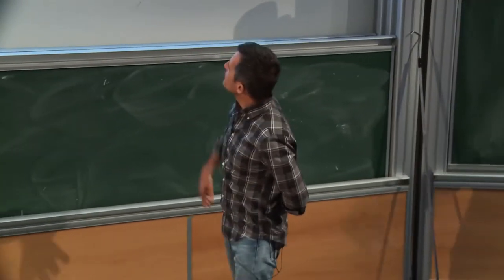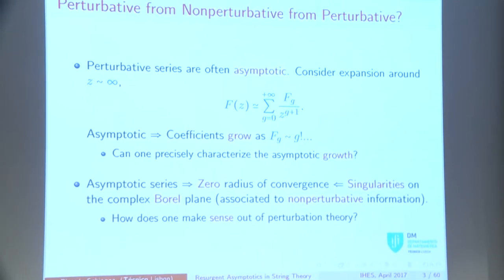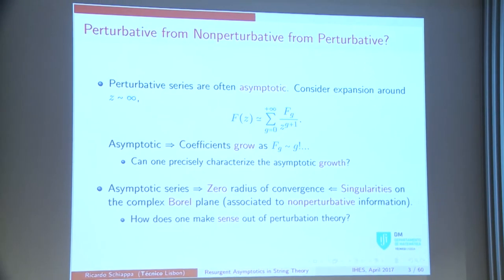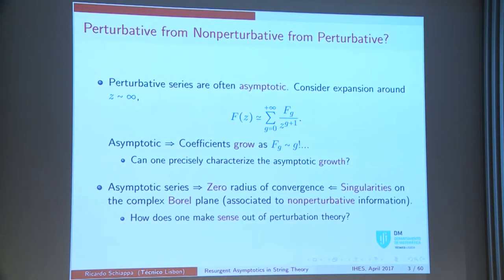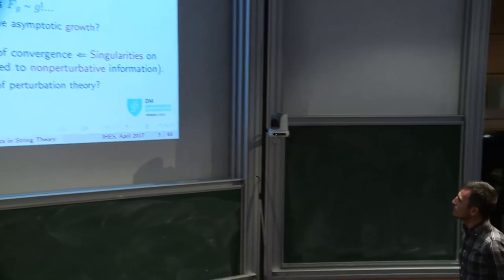This is work that's been going on for a long time with a lot of people. As Marcus was telling us this morning, perturbative series are often asymptotic. If we want to compute some quantity F in examples associated to energies in quantum mechanics or solutions of ordinary differential equations, we can try perturbative expansions around Z equals infinity. One question we'd like to answer is: we know that asymptoticness means these coefficients at leading order grow factorially fast. Can we precisely characterize the asymptotic growth, meaning can we say anything about the subleading contributions — the ones that are slower than factorial?